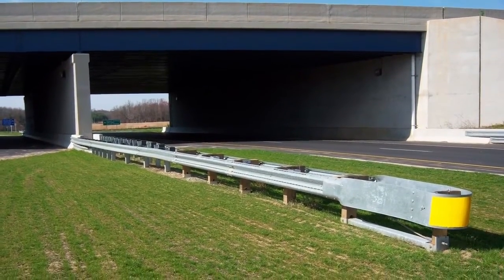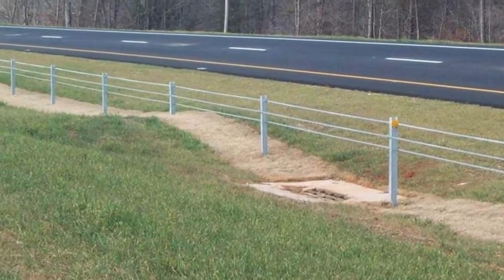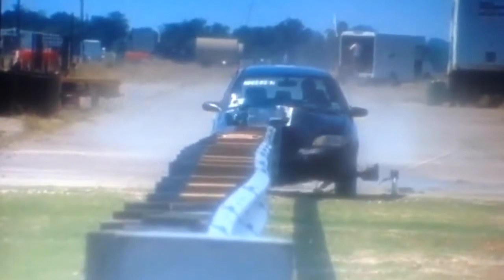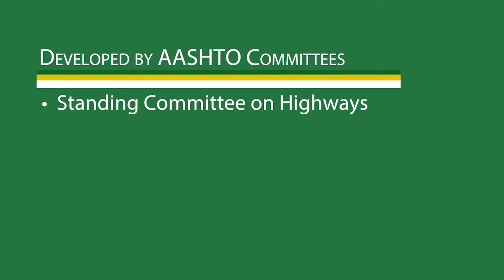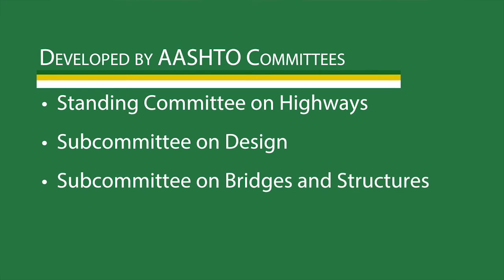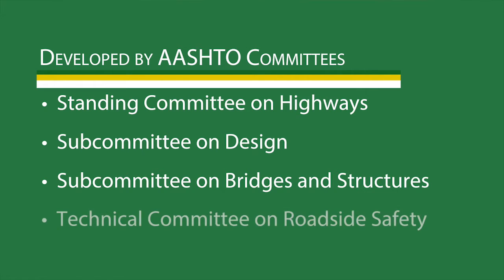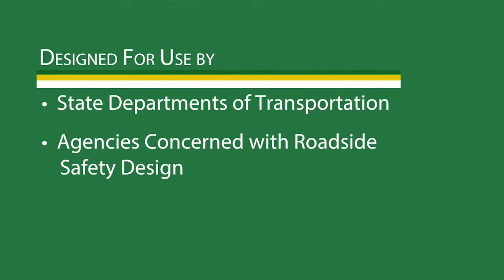The crash performance criteria allows for the transportation industry to provide the roadside systems that meet predicted performance through testing consistency. Developed by the ASTRO Standing Committee on Highways, the Subcommittee on Design, the Subcommittee on Bridges and Structures, and Technical Committee on Roadside Safety, the Manual is designed for use by State Departments of Transportation and other agencies concerned with roadside safety design.